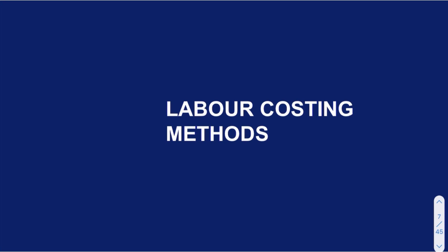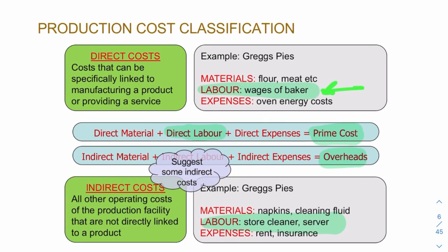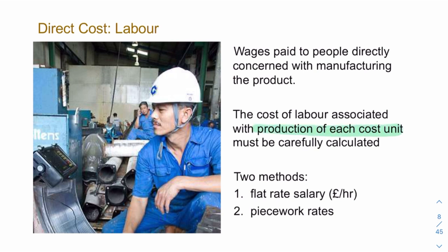Labour comes under direct costs — you have direct labour costs and indirect labour costs. How do you cost the labour involved in producing something? You can either have a flat rate — an hourly rate based on how much it costs to employ staff — or you can have a cost associated with each item produced. So it's either cost per unit produced, or it's based on a flat rate.